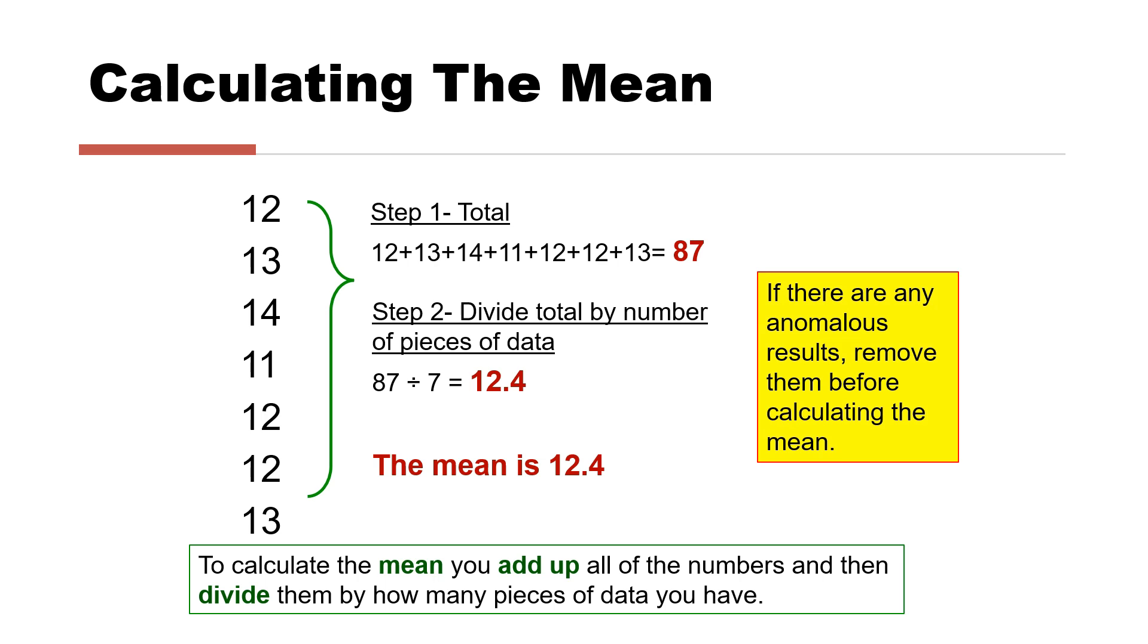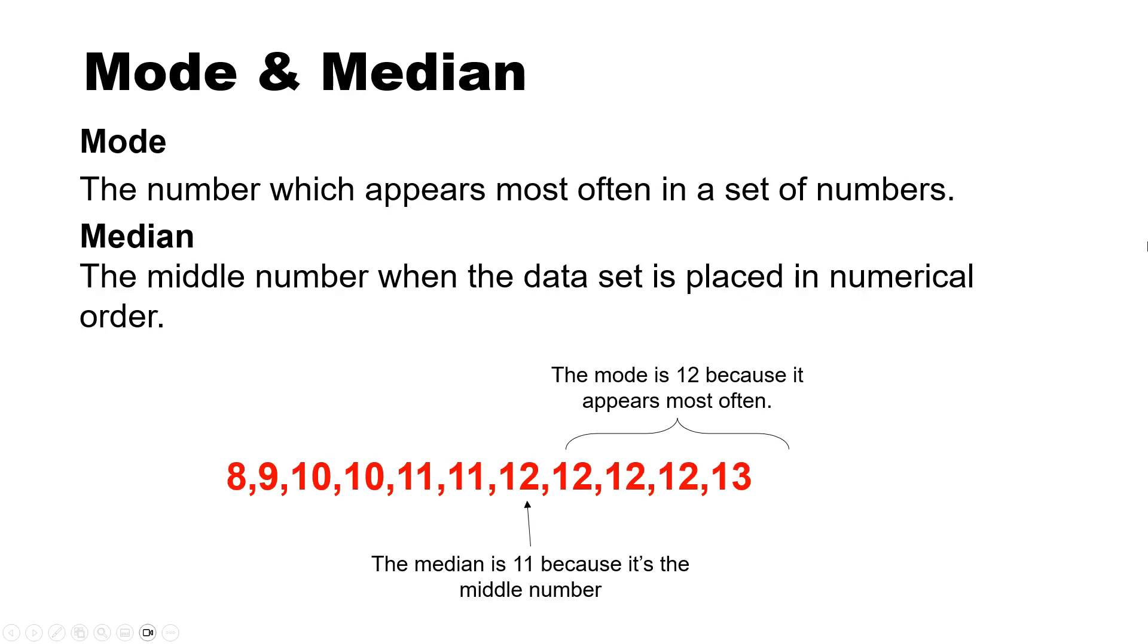Calculating mean always comes up. So remember, you add them up and then divide the total by the number of pieces of data. If there are any anomalous results, then you would remove them before you calculate the mean. Mode and medians has come up in exams. So the mode is the number which appears most often in a set of numbers. So in this case, it is 12 because it appears most often. And median is the middle number where the data is set, is placed in numerical order. So the median is 11 in this example.